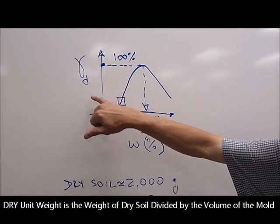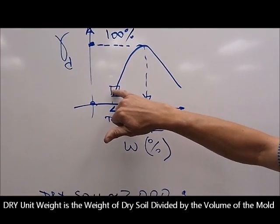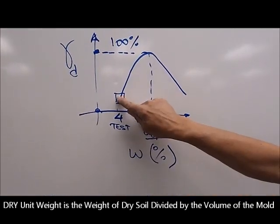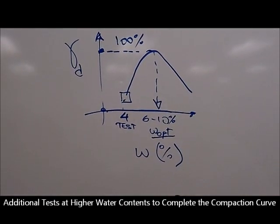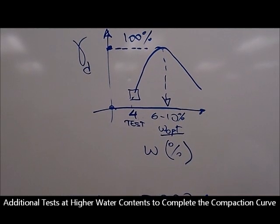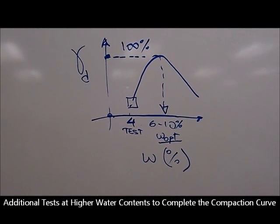With the water content, and with the unit weight of the material, you will get your first point in the curve. So this will be one point that you need to complete in order to build up your compaction curve.